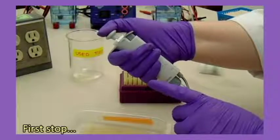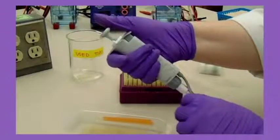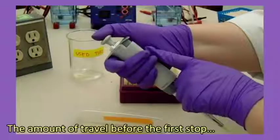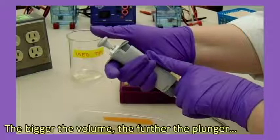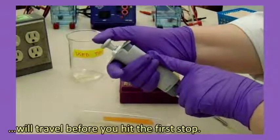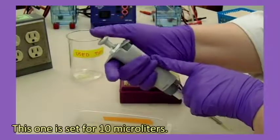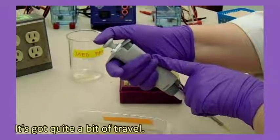The amount of travel before the first stop depends on the volume it's set to. The bigger the volume, the further the plunger will travel before you hit the first stop. This one is set for 10 microliters. It's got quite a bit of travel.